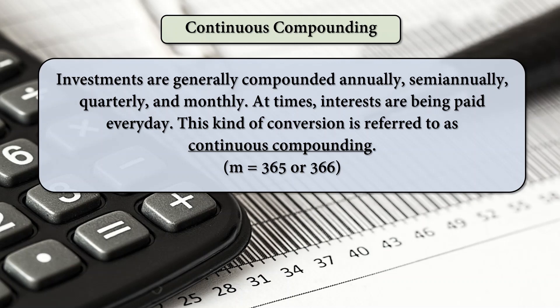At times, interests are being paid every day or daily. This kind of conversion is referred to as continuous compounding, where M is equal to 365 or 366.